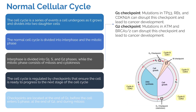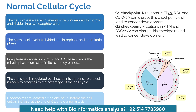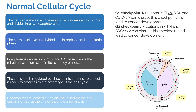Before understanding cancer itself, we need to understand the normal cellular cycle. The cell cycle is a series of events a cell undergoes when growing and dividing into two daughter cells. Checkpoint genes govern how, when, and which cells will grow, divide, and eventually die through apoptosis. The normal cell cycle is divided into interphase — including G1, S, and G2 phases — and the mitotic phase, which consists of mitosis and cytokinesis.